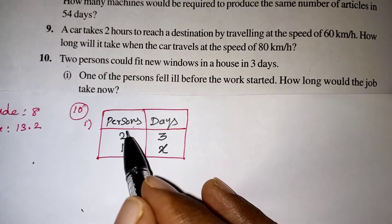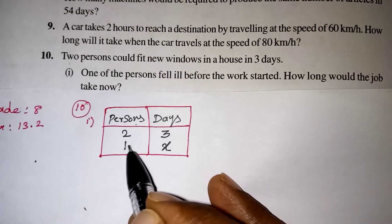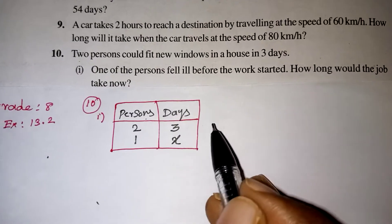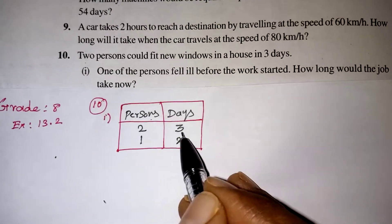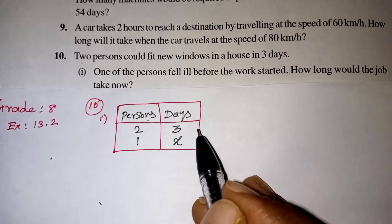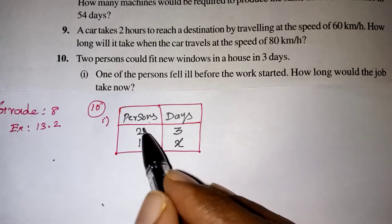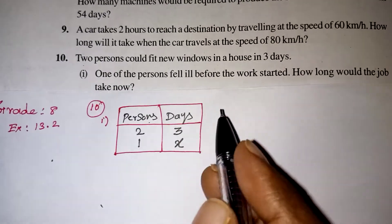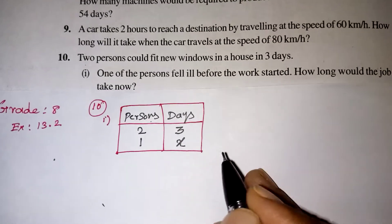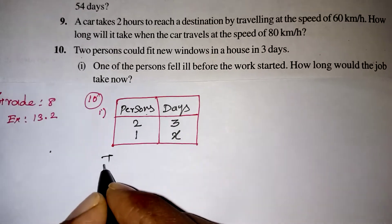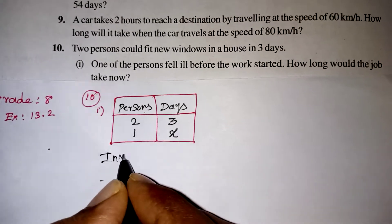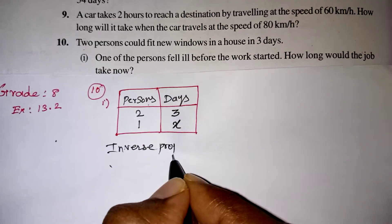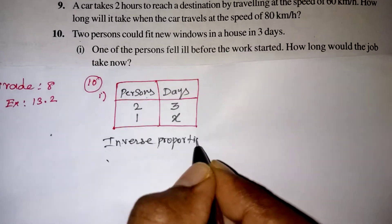So the number of persons is getting decreased, definitely the number of days will be getting increased. He cannot complete it in three days — he will be taking more days. So the persons are getting decreased and the number of days will be getting increased.